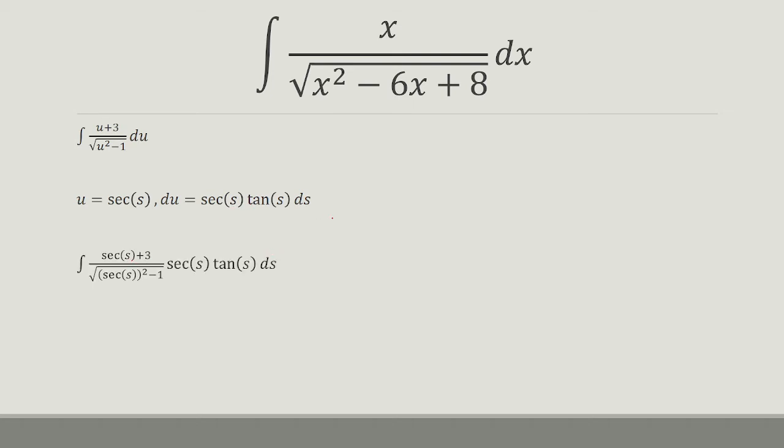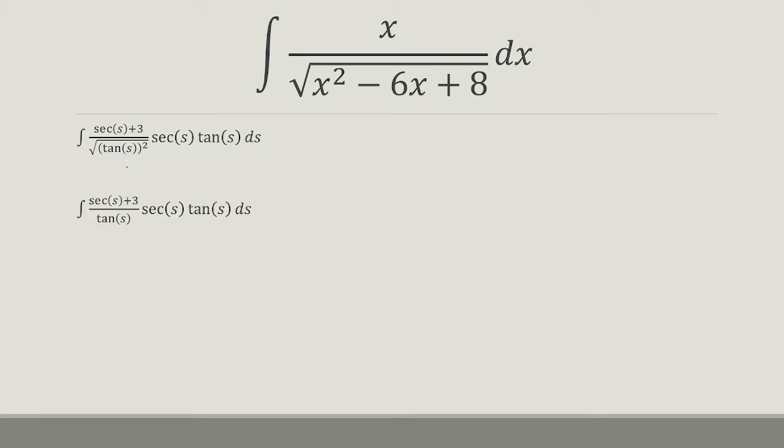Now notice that 1 plus tangent squared is equal to secant squared. So if I subtract both sides by 1, I get tangent squared is equal to secant squared minus 1. So this right here is going to get replaced by tangent squared. And now the square root of tangent squared is just tangent. And then that's going to cancel out with this tangent.